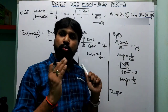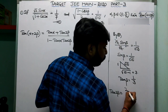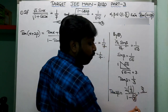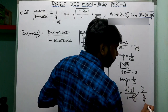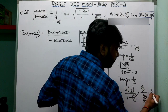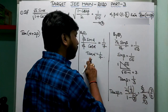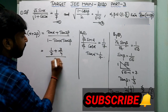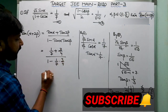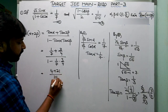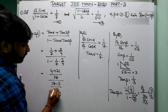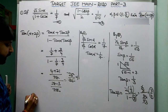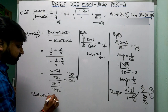Now tan 2β = 2tan β / (1 − tan²β) = (2 · 1/3) / (1 − 1/9) = (2/3) / (8/9) = 3/4. So tan α = 1/7 and tan 2β = 3/4. Therefore tan(α + 2β) = (1/7 + 3/4) / (1 − 1/7 · 3/4) = (4 + 21)/28 / (28 − 3)/28 = 25/28 · 28/25 = 1. The answer is tan(α + 2β) = 1.